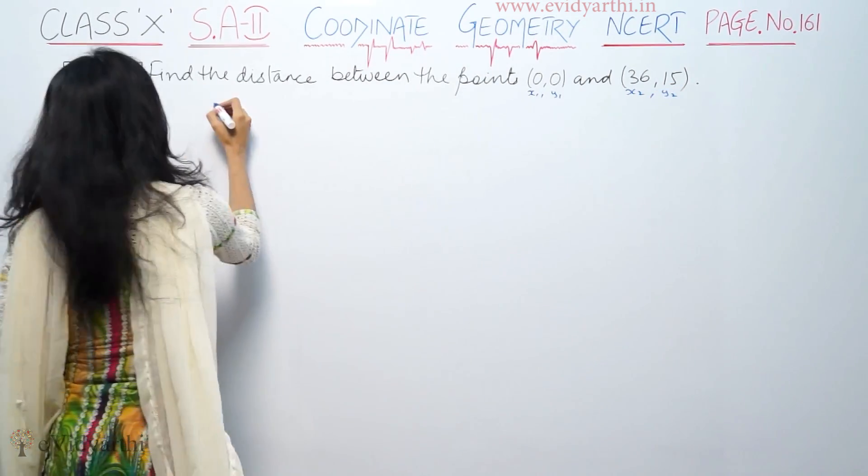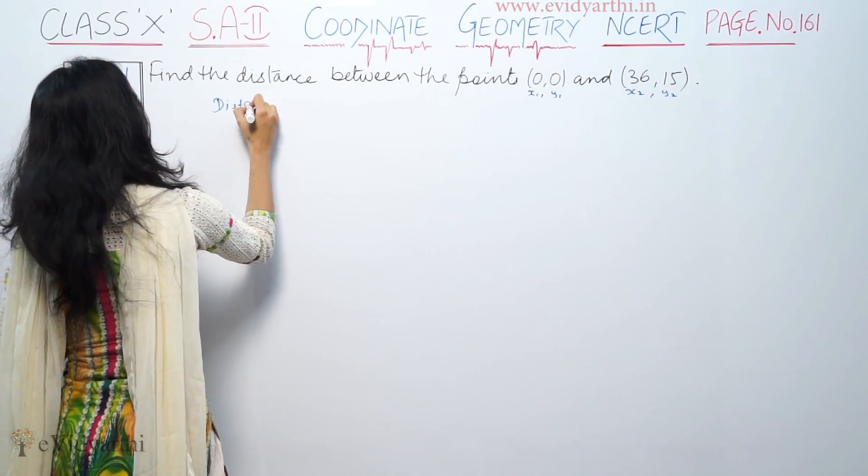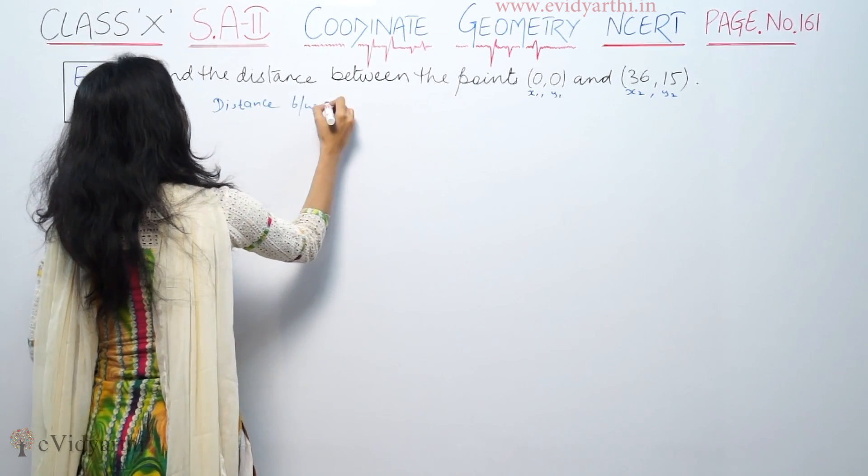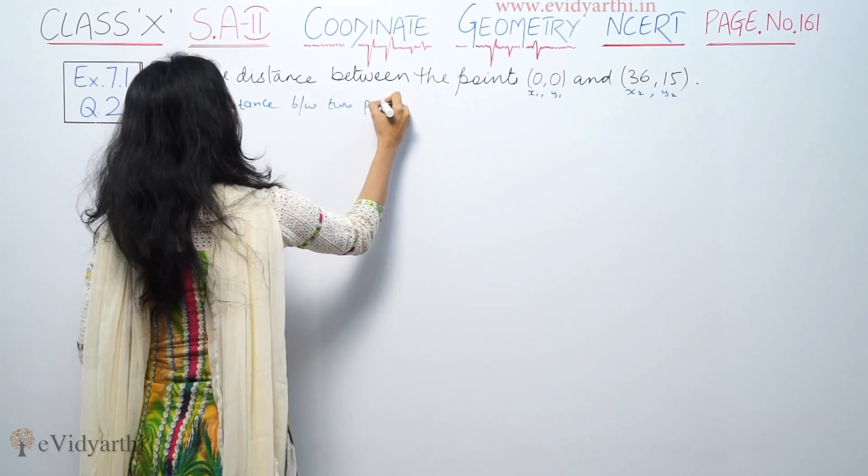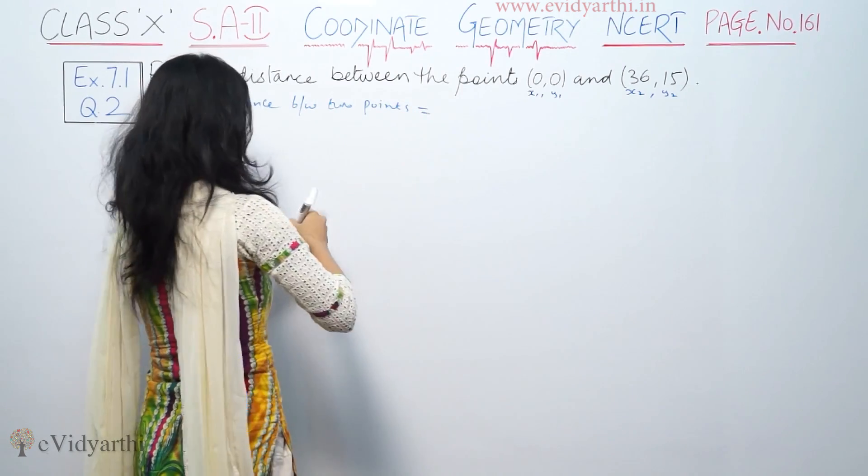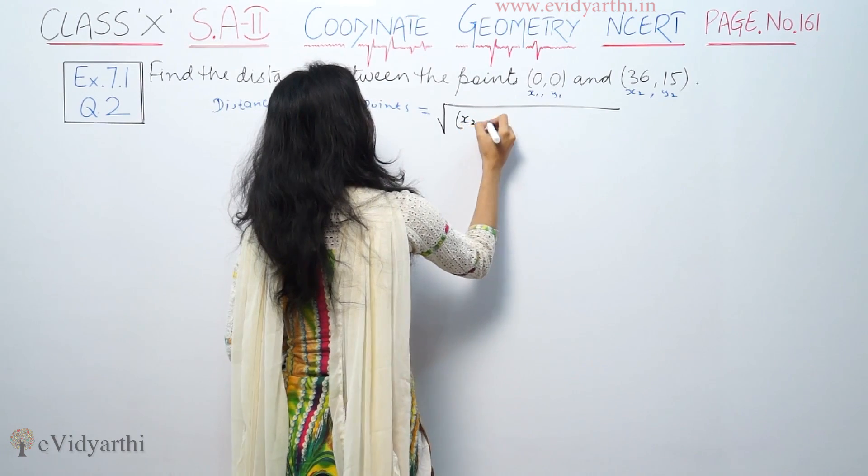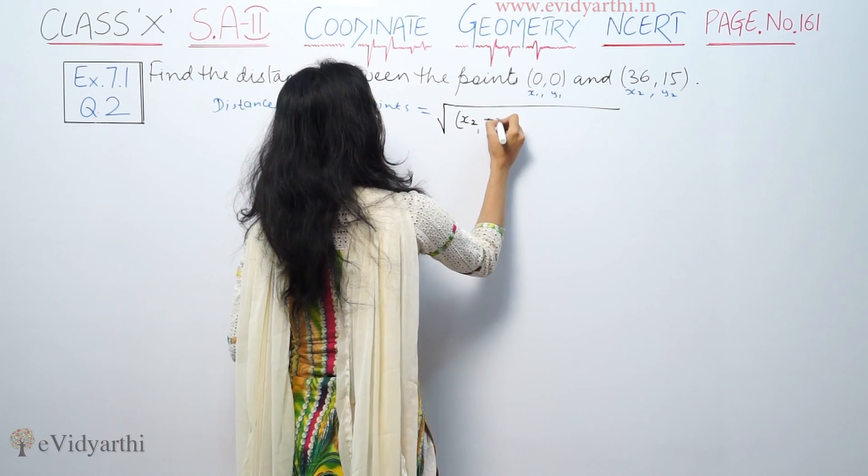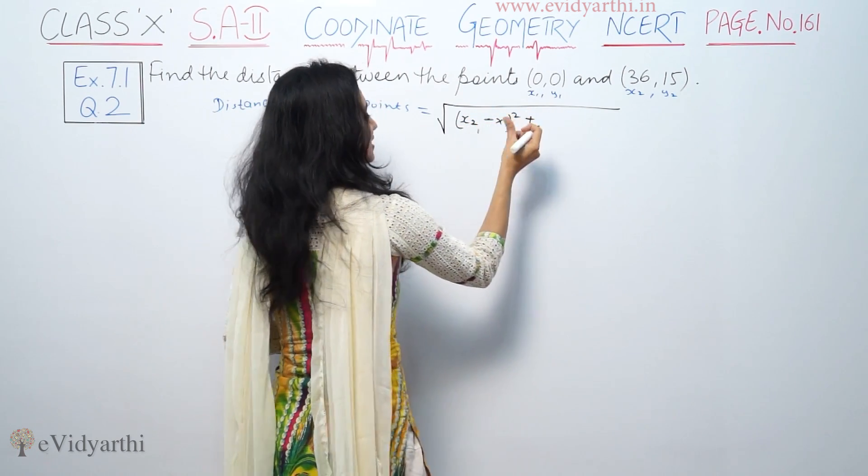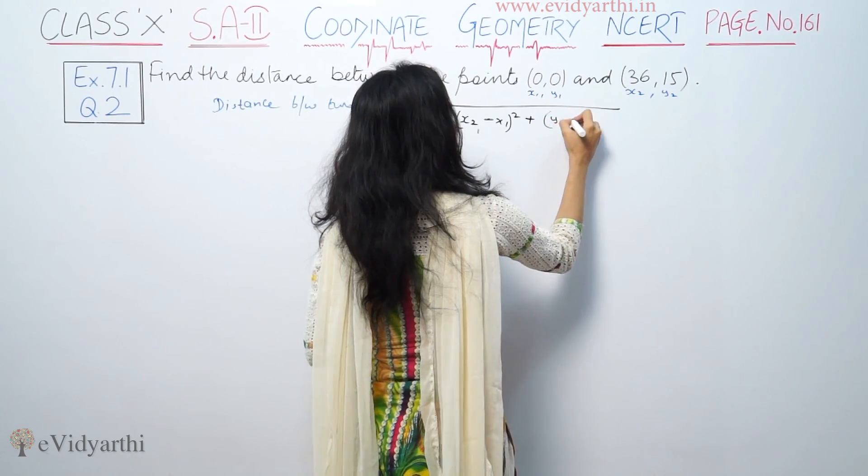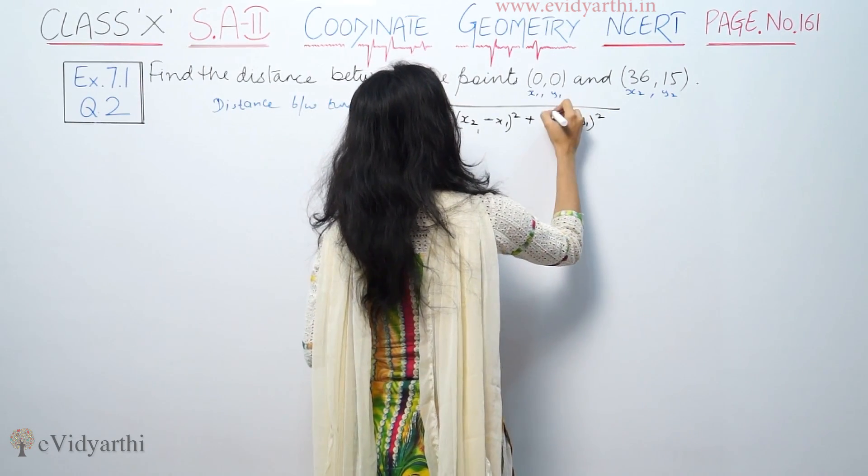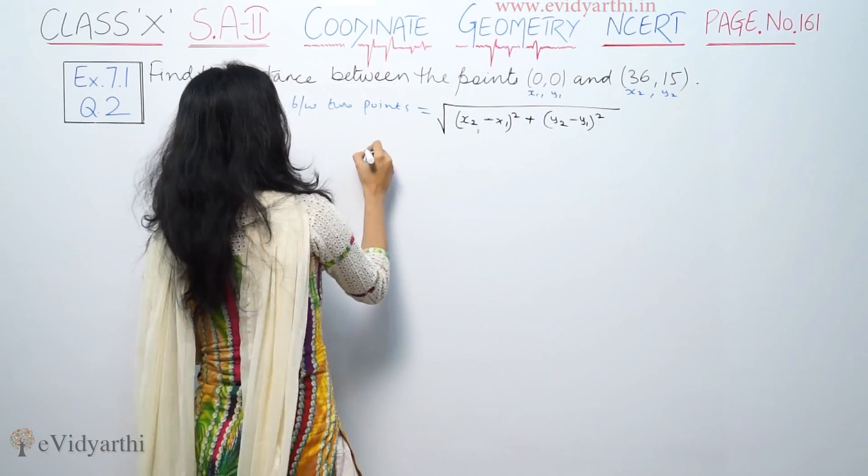Distance between two points is equal to—we use this distance formula: square root of (x2 minus x1) whole square plus (y2 minus y1) whole square.